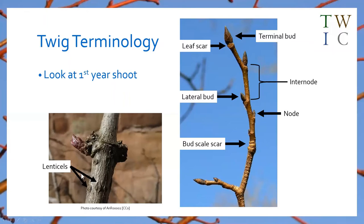The next term is lenticels — effectively breathing pores in the bark of the twig. In some species they're quite prominent, almost looking like warts, quite raised. The shape and size of lenticels varies: they might be almost like a small dot, or almost like a little dash. Generally they'll be a different colour to the background colour of the twig, so you can recognise them that way.